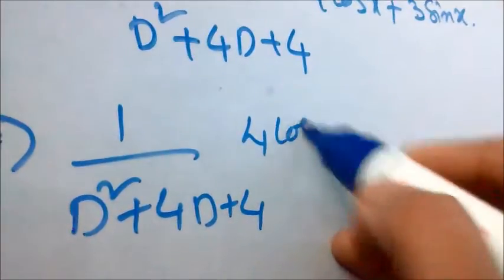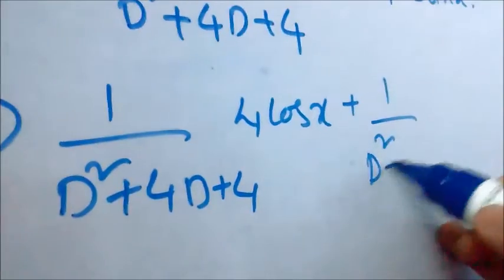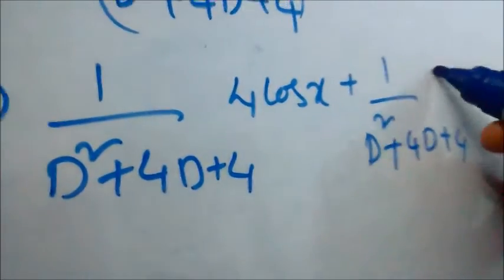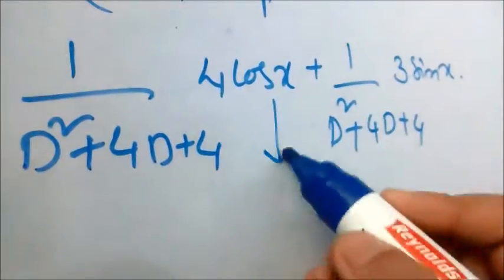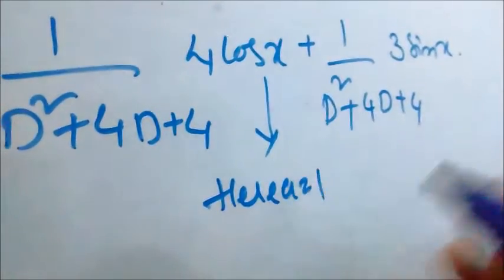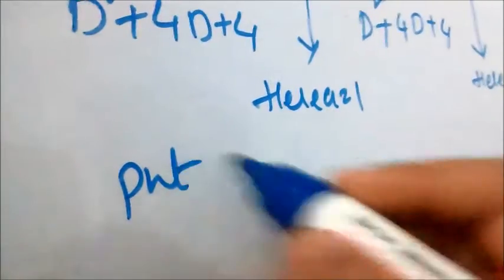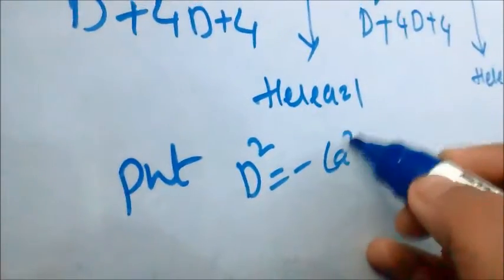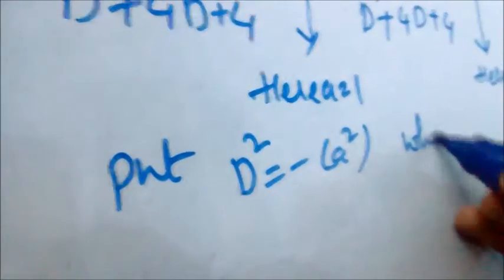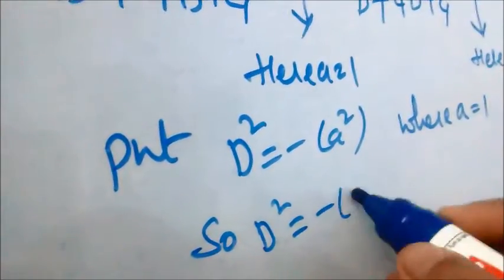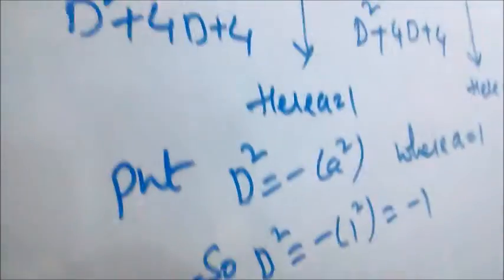Here a = 1 for both cos(x) and sin(x) terms. We substitute D² = -a², where a = 1, so D² = -1² = -1. Substitute this value into each term.